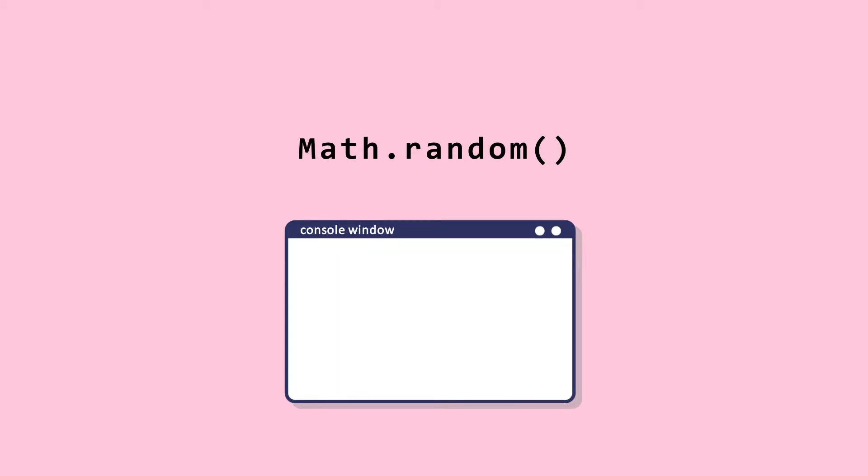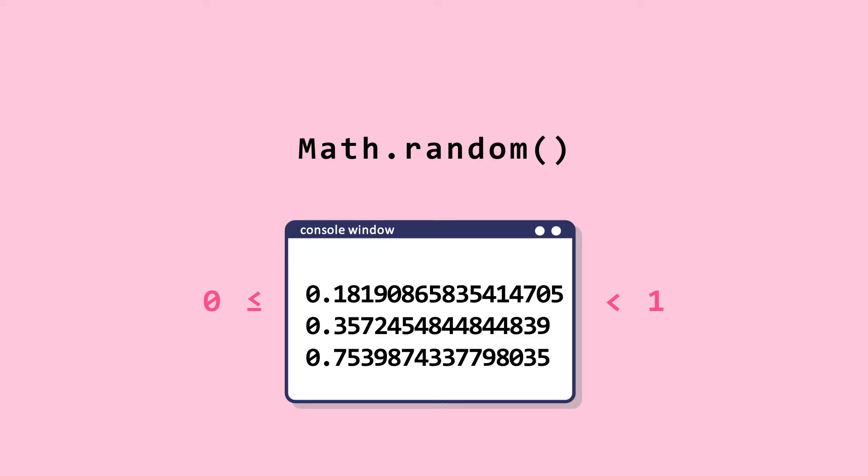Let's build a virtual dice step by step. Step 1: Math.random generates random double numbers between 0 and 1. The numbers generated would look something like this.